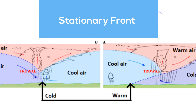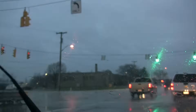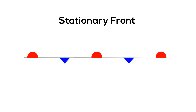A stationary front forms when a cold air mass meets a warm air mass. However, both air masses do not have enough force to lift the warm air mass over the cold air mass, so the two air masses just remain separated. This may happen because there is not enough wind to keep the air masses pushing against each other. A stationary front often brings days of cloudy, wet weather, and here is the symbol for a stationary front.